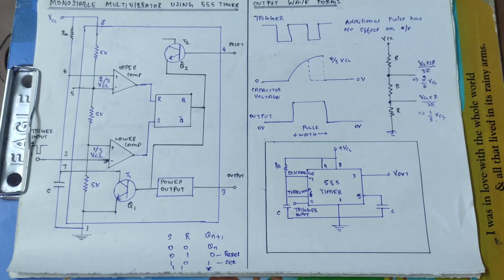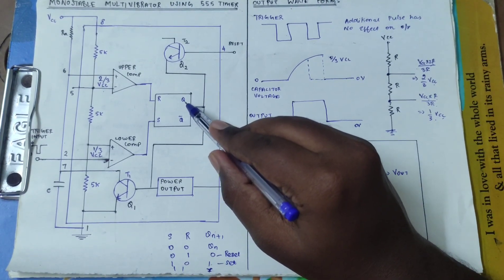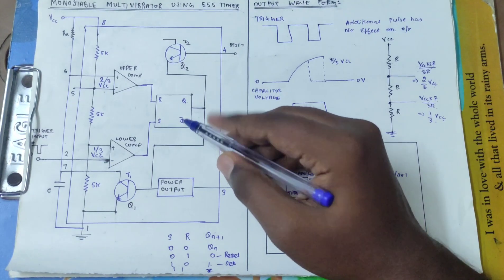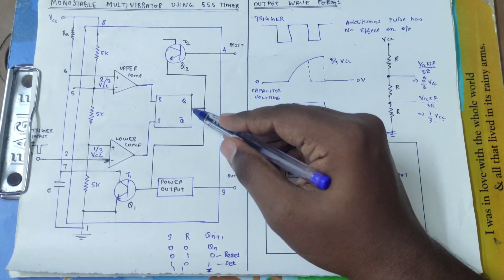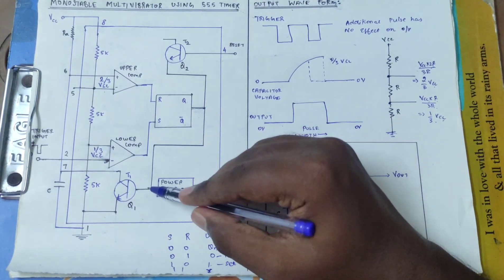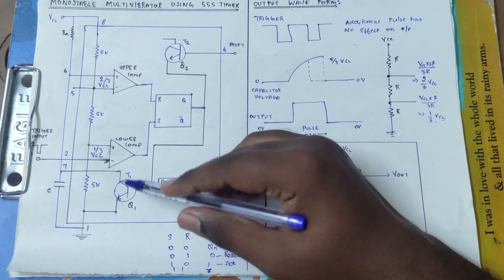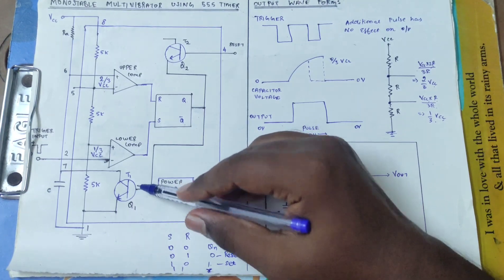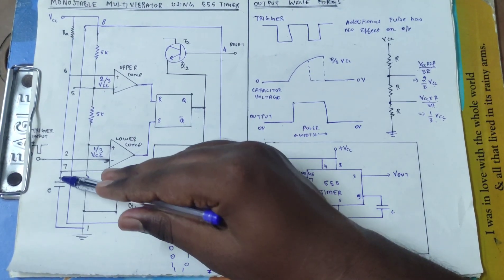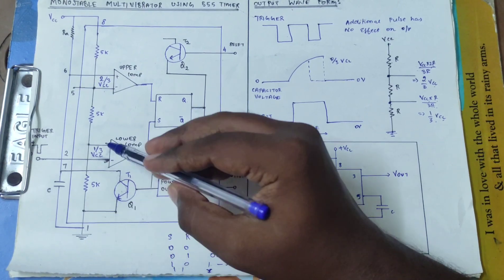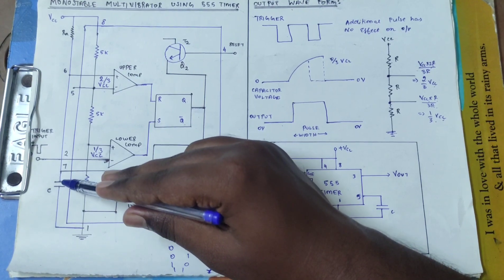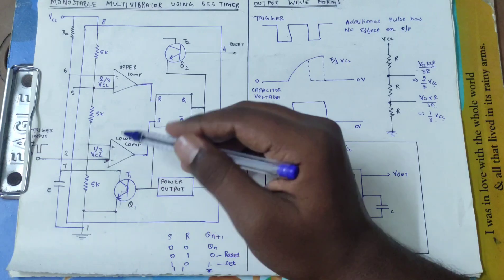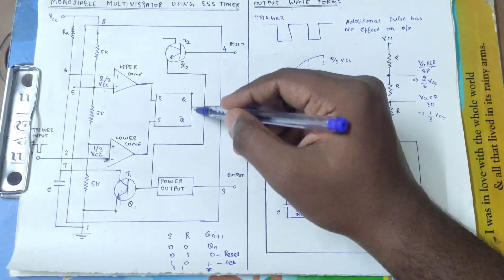If we look at the standby state, at the steady state, the Q value is 0. If we look at Q value 0, Q bar value is 1, so output is 0. Now the transistor is on. The capacitor voltage reaches 0.7V and the transistor conducts, creating a short circuit. The capacitor will direct through the transistor link to ground, so the capacitor starts to discharge. The capacitor is discharged from the start. So the output is 0.